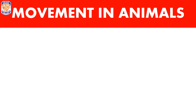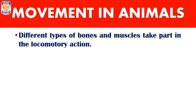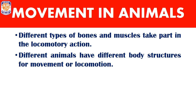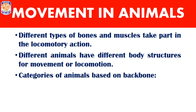Different types of bones and muscles work together to help us in locomotion. Different types of animals have different body structures for their movement. There are two categories of animals based on the presence or absence of a backbone — not all animals possess backbones in their bodies.